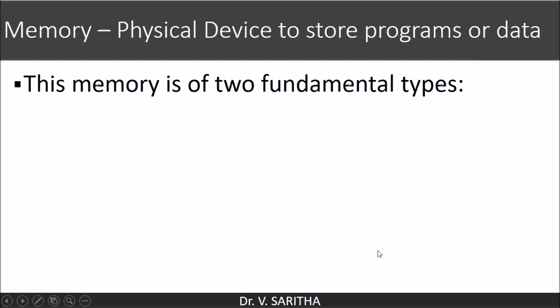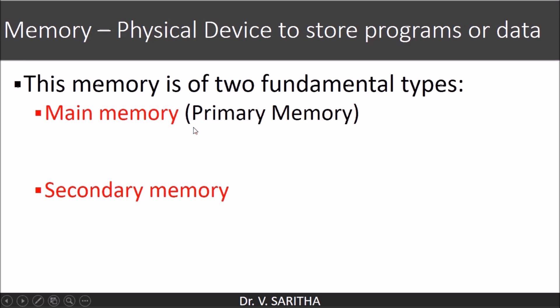Now we will see about the memory functional component. Memory is a physical device used to store programs or data. Any kind of programs or data that we work with in the system will be stored into memory. Basically, it has two fundamental types: main memory, also called primary memory, and secondary memory.